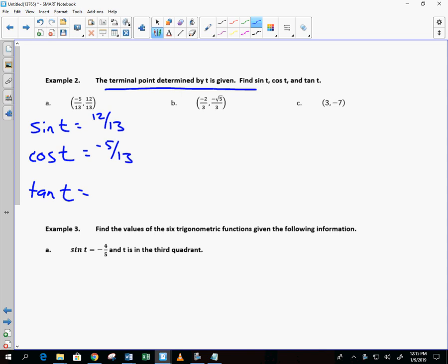Do you remember how to find tangent? Y over X. So, that's 12 over 13 divided by negative 5 over 13. Multiply by the reciprocal. 13's cancel. Negative 12 over 5. Psych upside down, right? Wrong.